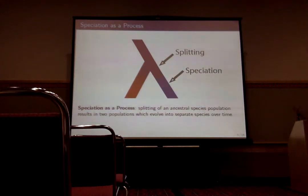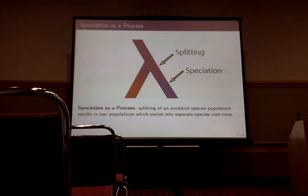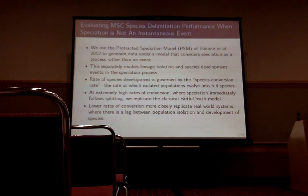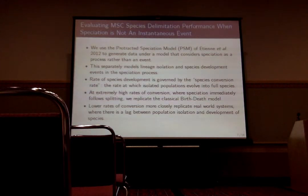Now let's contrast this with another model: speciation as a process, as opposed to speciation as an event. This decouples the splitting event from the speciation event further down the road — there's a lag between population isolation and development of full species. Speciation occurs after the splitting event, or it may not occur at all, depending on when you sample your system. So we wanted to ask: when you give the multi-species coalescent data generated under a model that assumes speciation is a process, how does it perform?